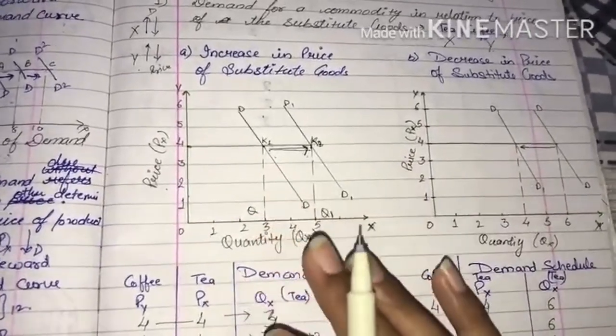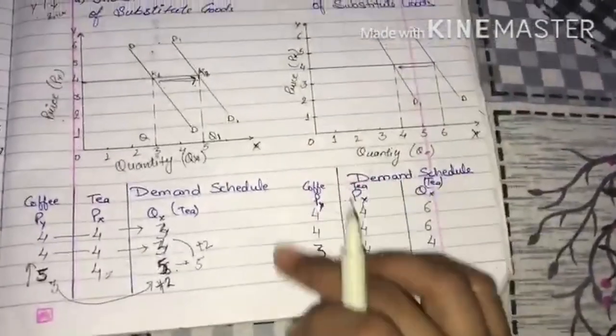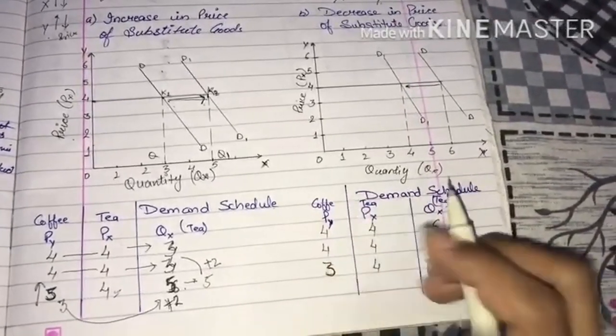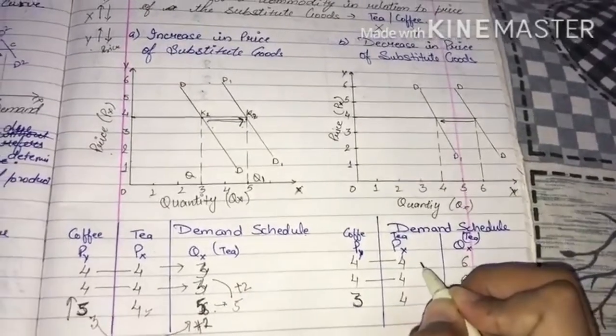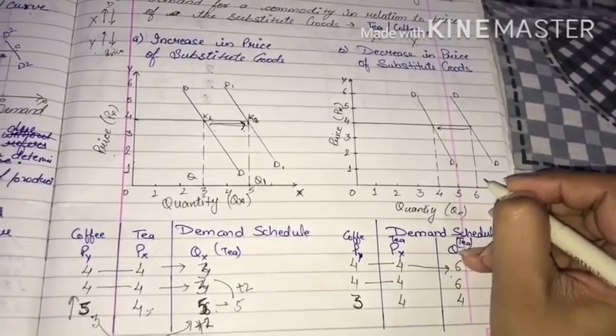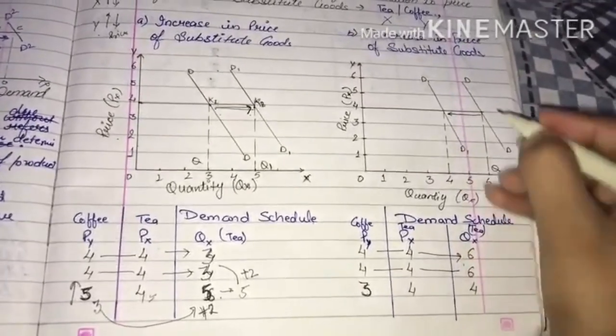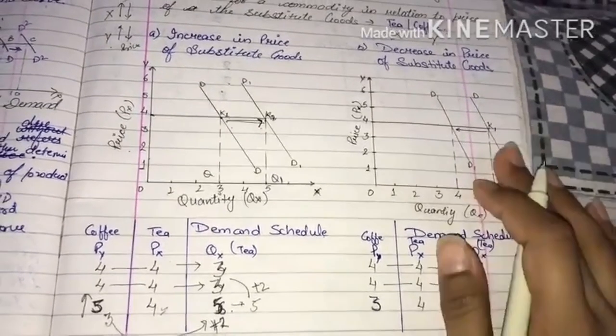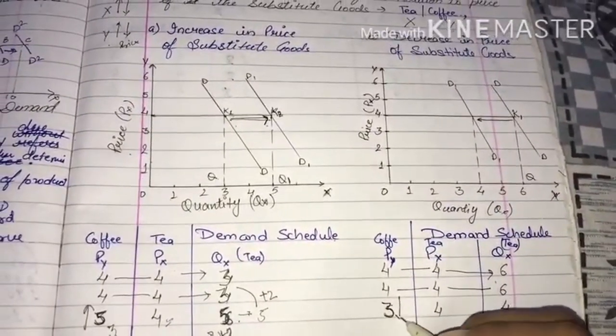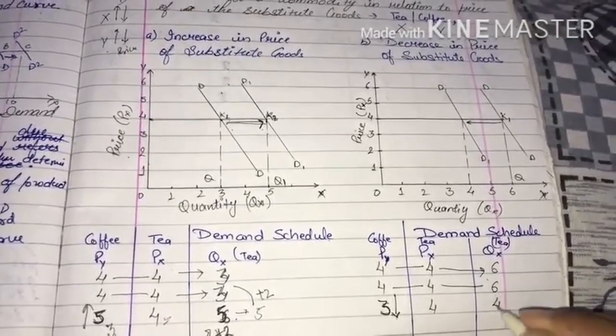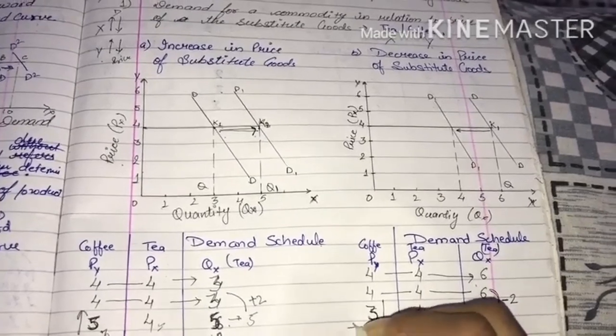Now let's look at decrease in price of substitute goods. I've made the same schedule where initially tea's price was 4 and my initial demand was 6. When coffee's price decreased, my quantity went from 6 to 4, meaning minus 2 consumers.